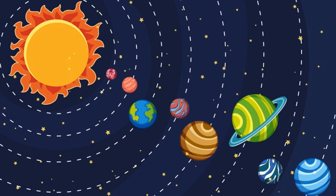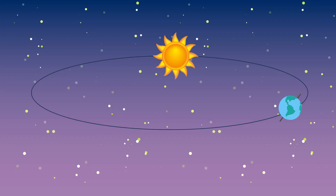I hope you know that the sun is the center of the solar system and around it all other planets revolve, including Earth, as shown in the picture. Just like all other planets, Earth is also revolving around the sun.